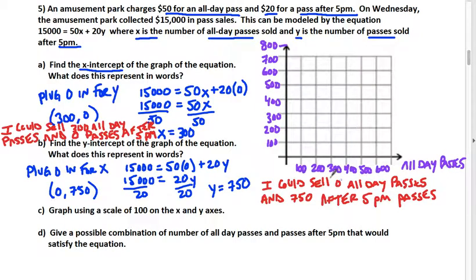The Y-axis is the passes after 5 p.m. Now we're going to graph these two points. The x-intercept was 300 comma 0, and the y-intercept was 0 comma 750. Get it between 700 and 800, and then connect those two with a line. There's my graph.